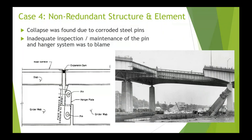This bridge also has a suspension span in the center with a length of 31 meters, supported by a pin and hanger system. Corrosion of the steel plate girders led to geometric changes in the joint and generated unanticipated forces. The collapse in 1983 was caused by the failure of two pin and hanger assemblies that held the deck in place. The whole suspension span fell to the river 21 meters below. The incident was blamed on inadequate inspection of the pin and hanger system.